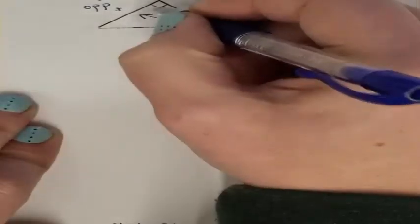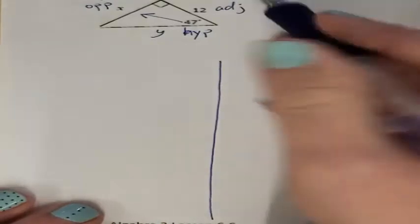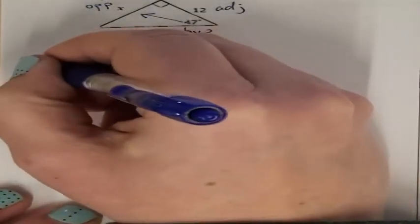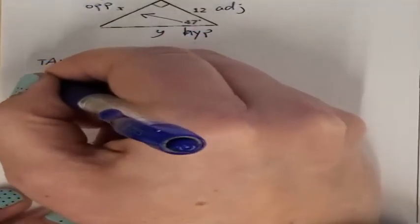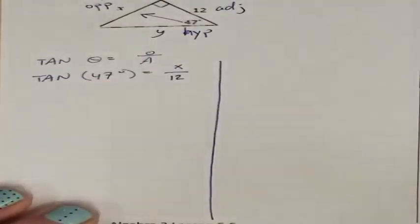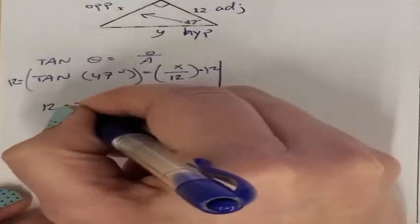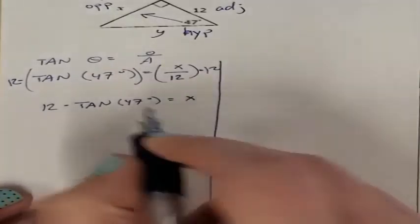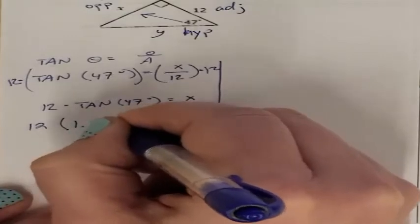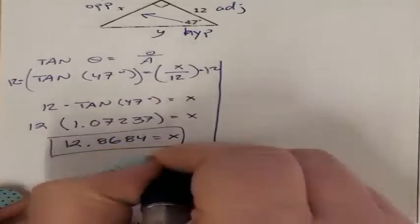Our next problem: I have one side length and I'm missing the other two. Here is the degree angle, so across from it is the opposite. This is my adjacent, and diagonal from the 90 is my hypotenuse. I have my adjacent, and I need to find both opposite and hypotenuse. Adjacent and opposite is tangent. So tangent of theta equals opposite over adjacent: tangent of 47 degrees equals X over 12. Multiplying both sides by 12, I get 12 times tangent of 47 degrees equals X. Tangent of 47 degrees is 1.07237, and multiplied by 12 gives me 12.8684 — that is my X value.